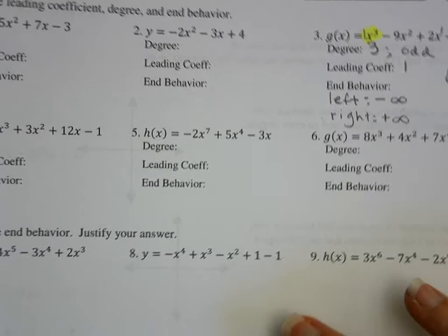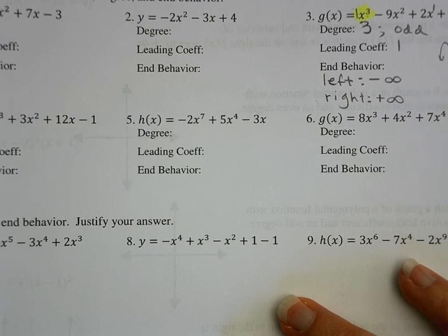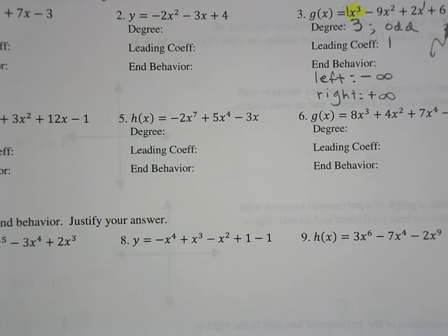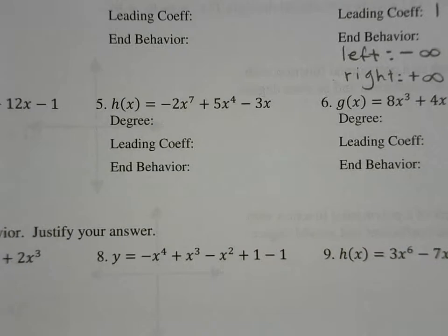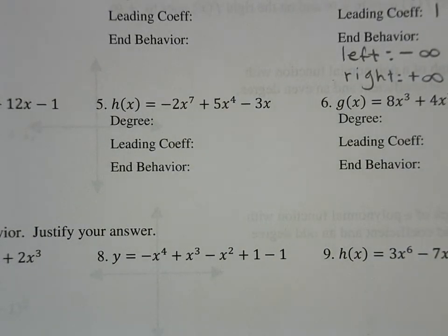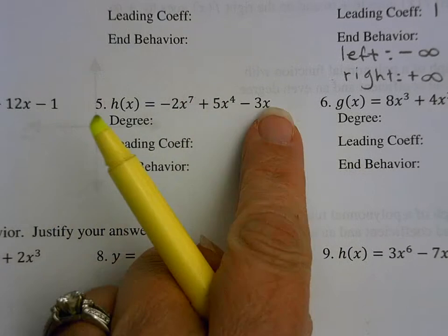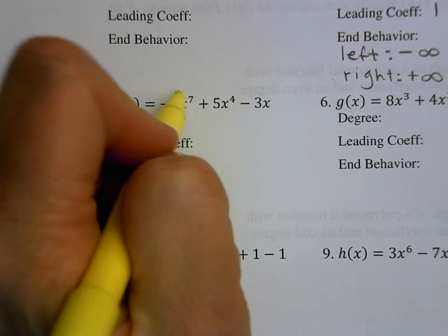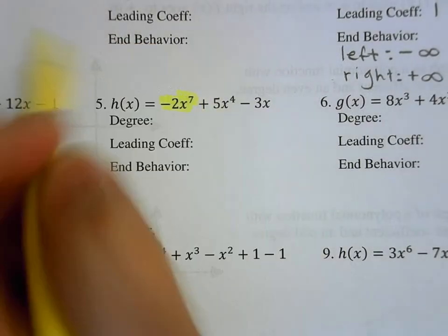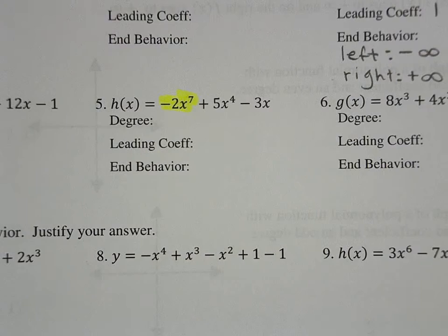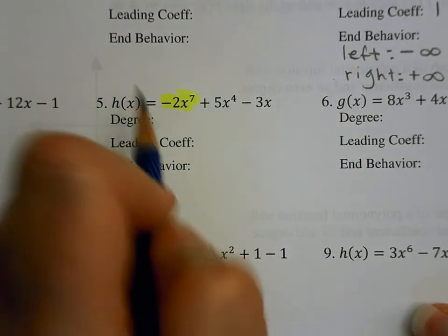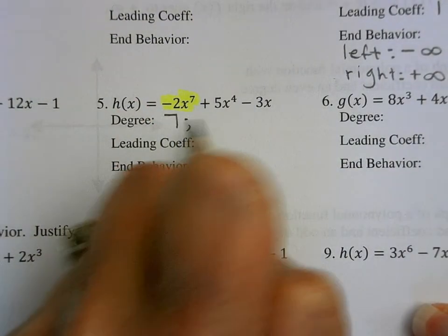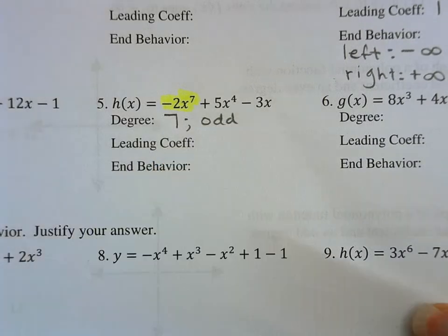Let's take a look at question number 5. For number 5, again I want to look for my highest power. I have a power of 7, and I want to make sure I check them all. The highest power is 7, so the degree is 7, which is an odd number.